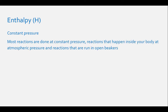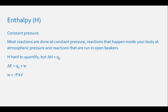Enthalpy, H, of a system needs to be taken into account when running a reaction at constant pressure. Most reactions are run at constant pressure, including reactions that happen inside your body at atmospheric pressure and reactions run in open beakers. Enthalpy is hard to quantify, but change in enthalpy is easy because it equals the heat that is lost or gained by a system at constant pressure. Another equation for enthalpy is related to the equation for internal energy: delta E equals heat plus work. Our work of concern in chemical systems is pressure-volume work, where work equals negative pressure times change in volume. Substituting in our work and enthalpy terms, we get delta E equals change in enthalpy minus pressure times change in volume.